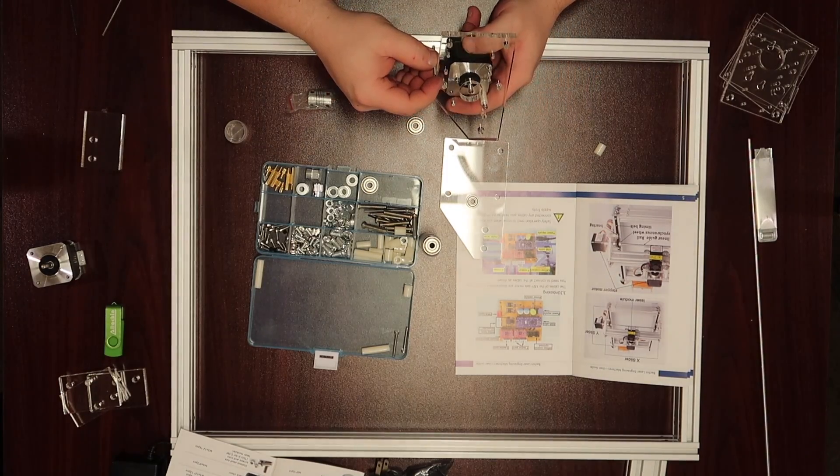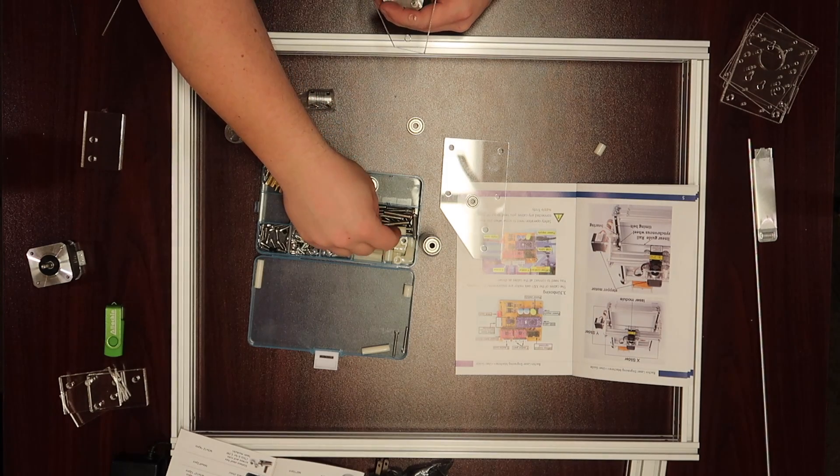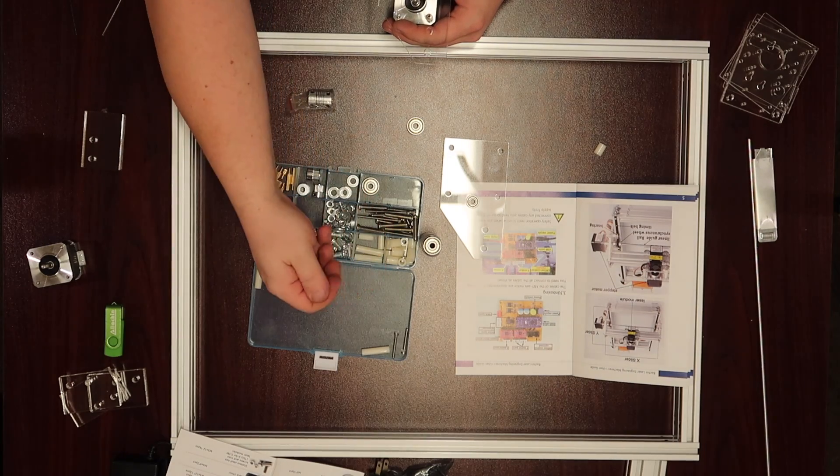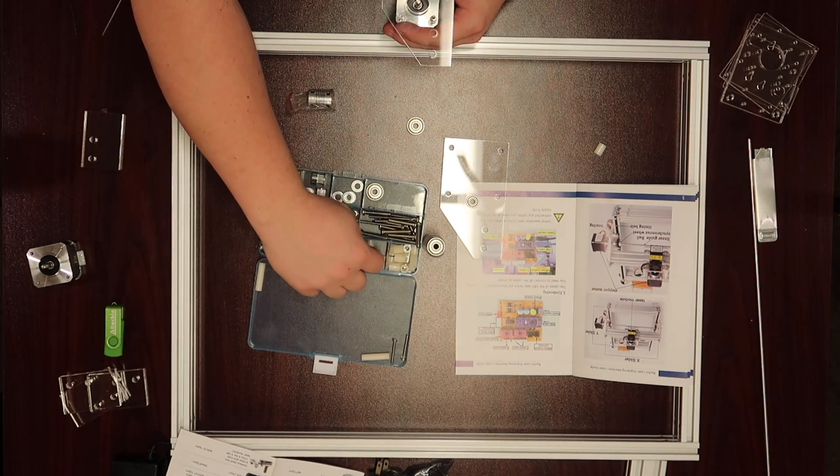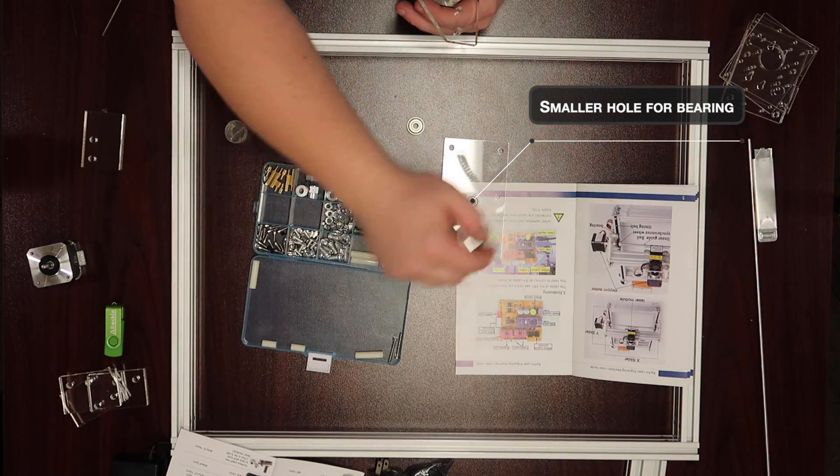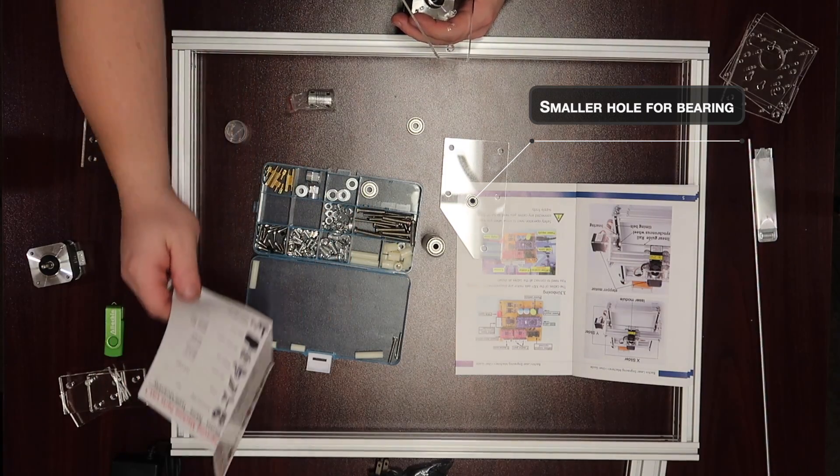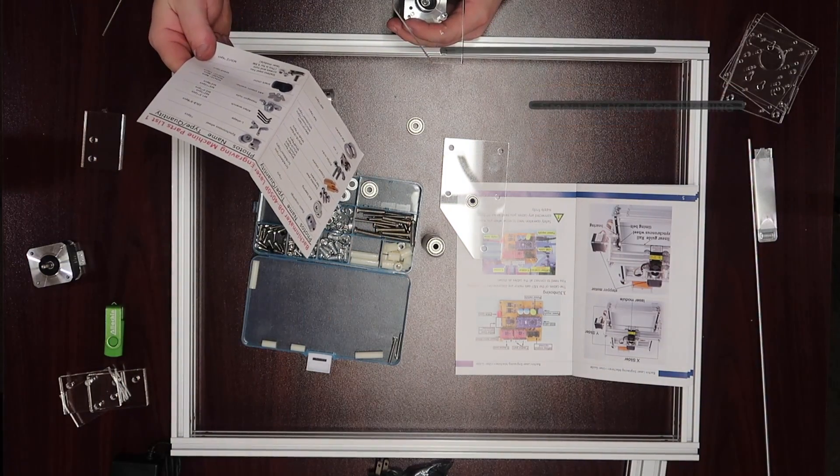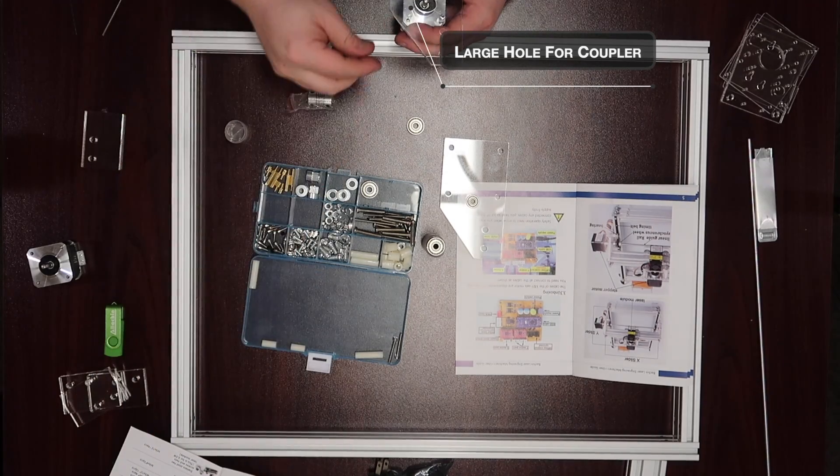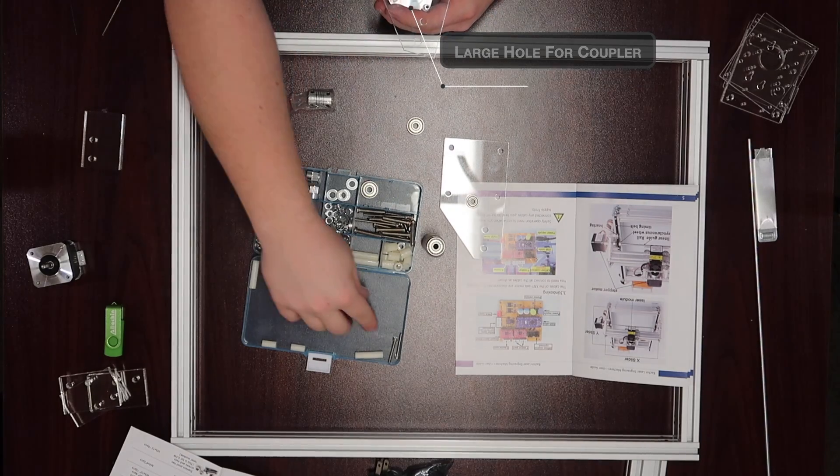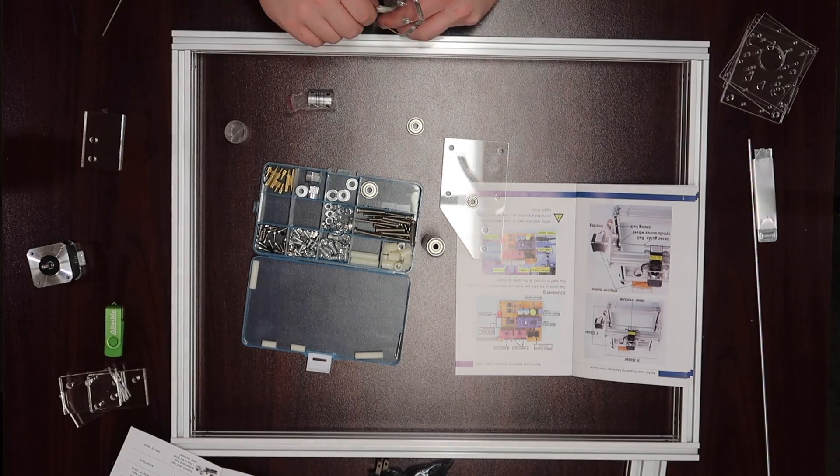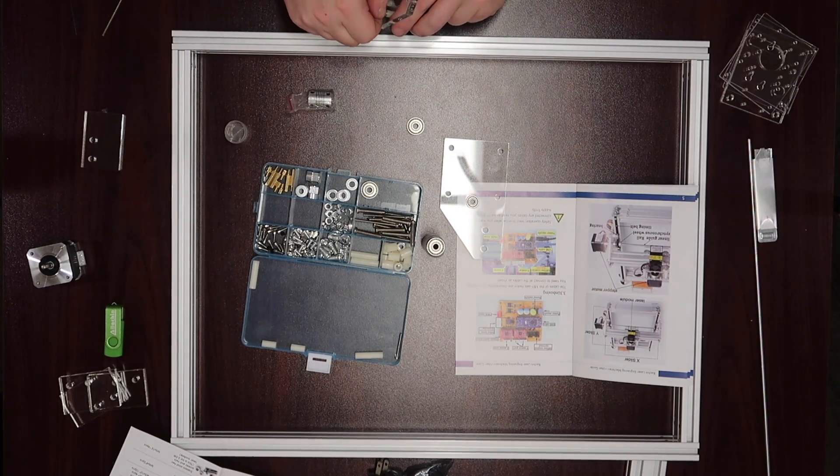Now I'm bolting the stepper motor for the y-axis to the bracket that's going to connect to the x-axis extrusion. The parts look identical, but as you can see here, one of the brackets has a smaller hole in it. That's for the bearing that holds the jack shaft that goes across. And then the other piece has a larger hole in the center, which is big enough for the motor coupler to go through. When bolting on the stepper motor, you're going to use four short spacers that come in the kit. They should be the only four spacers that have the smallest hole in the center.